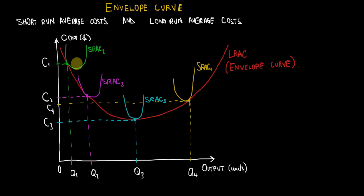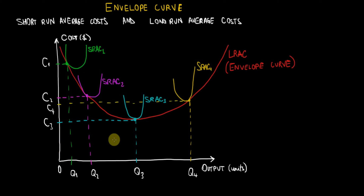I will describe this graph from left to right. I will describe what happens in the production of a firm from the beginning until it grows bigger and bigger. Suppose that the firm starts to produce output and begins to create units of output.